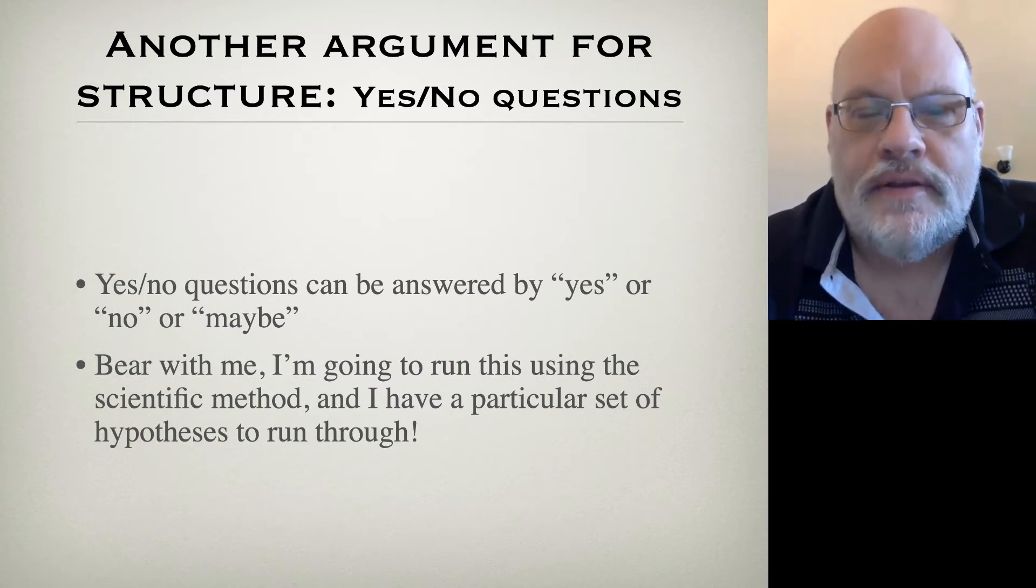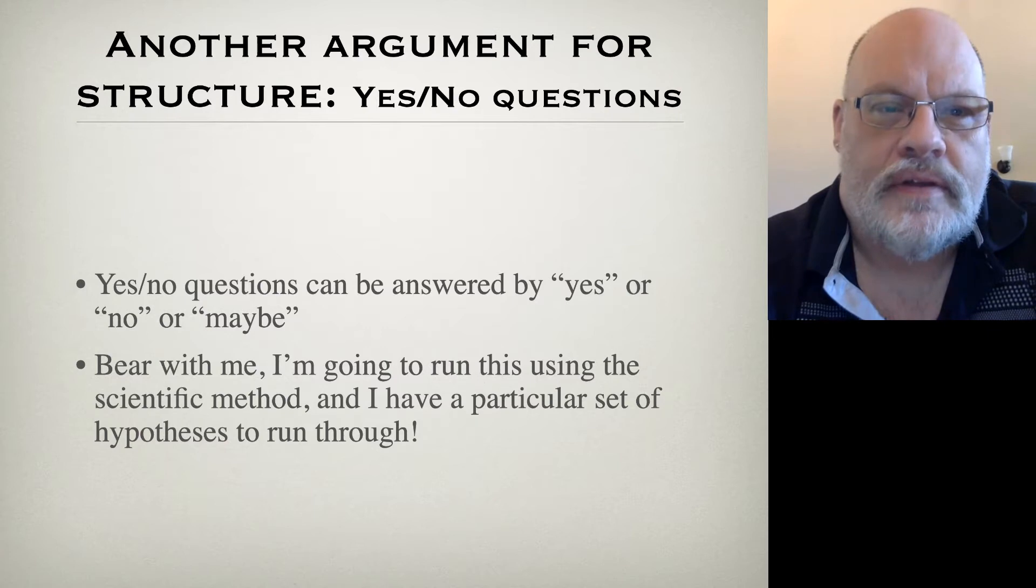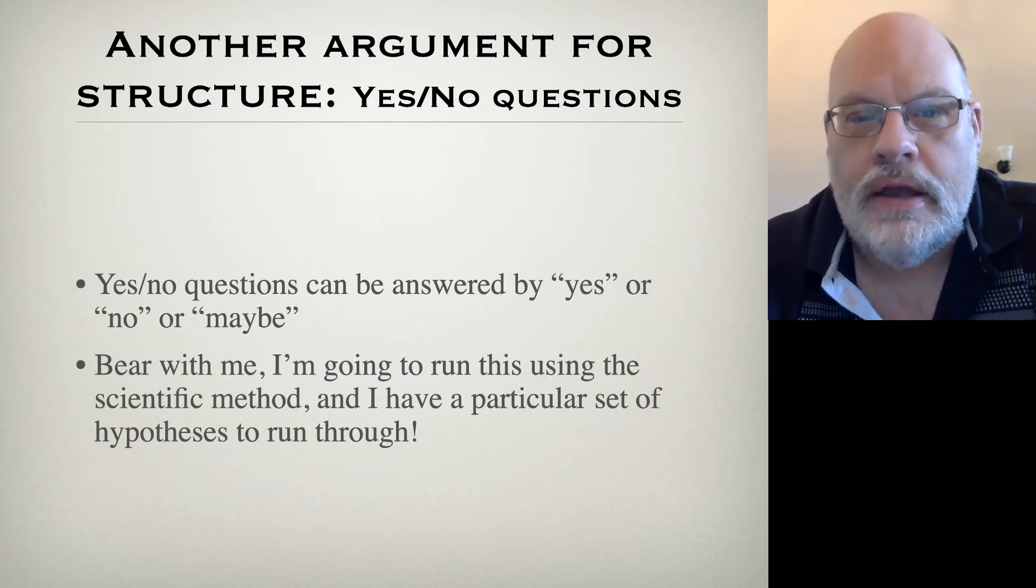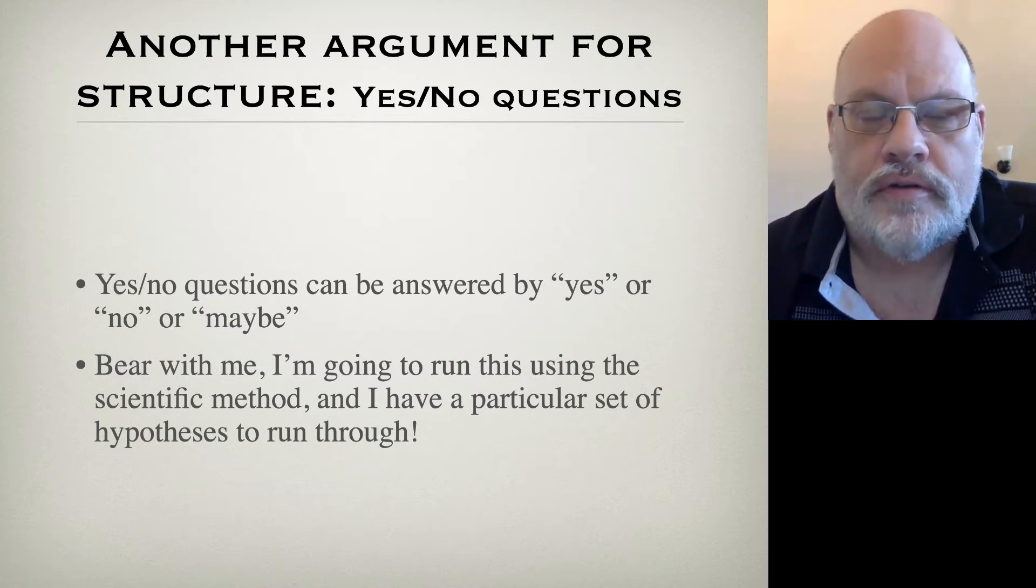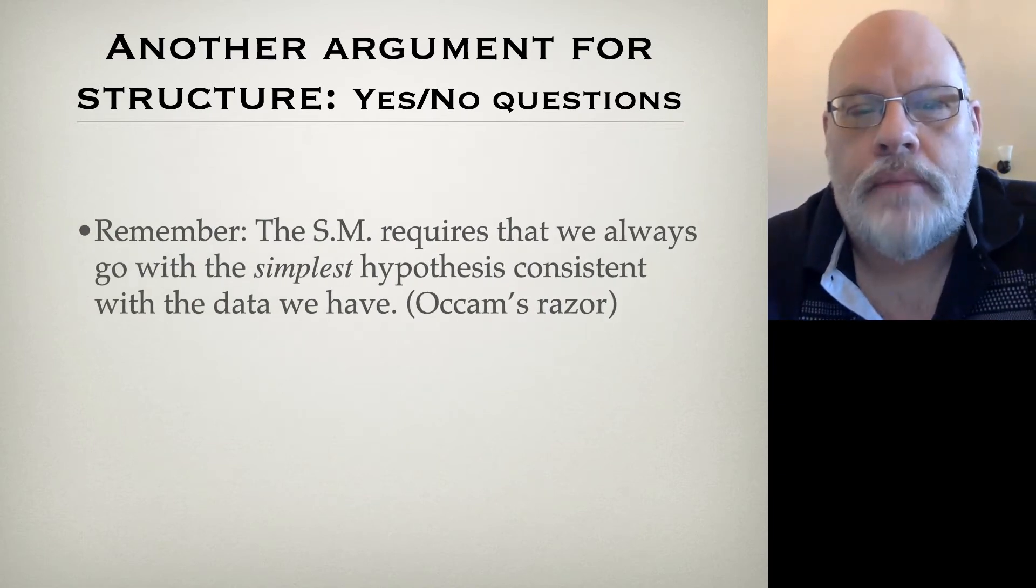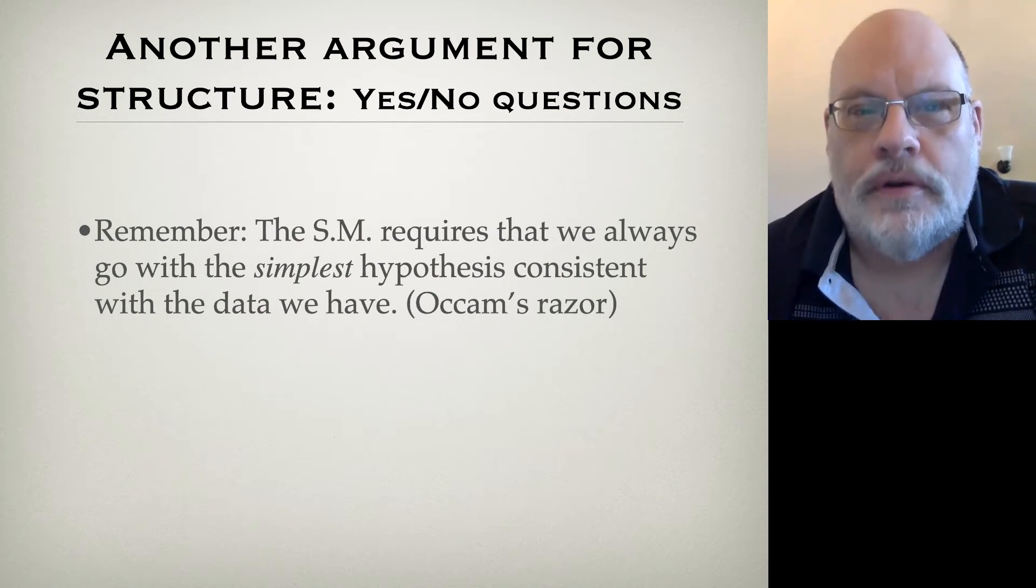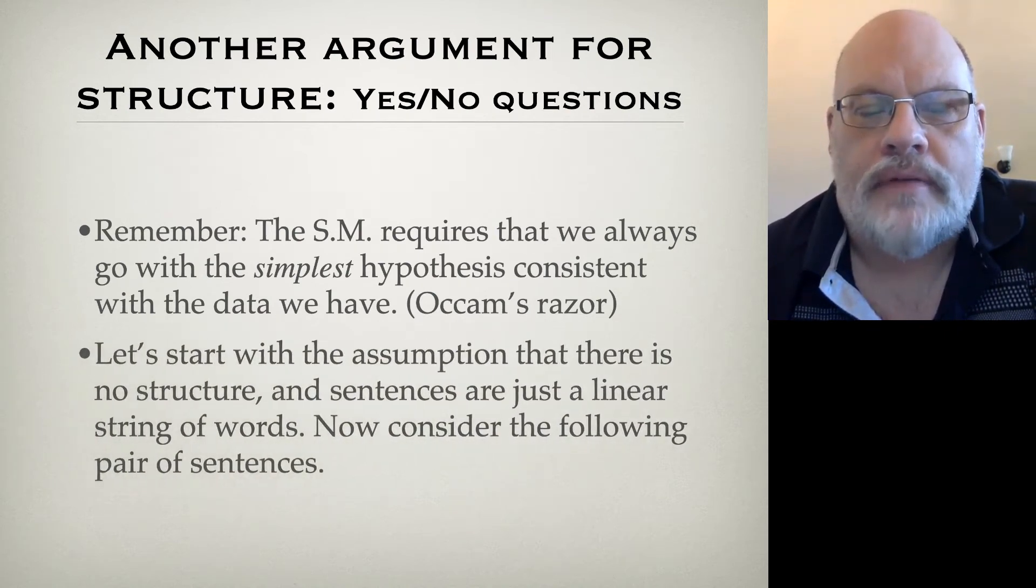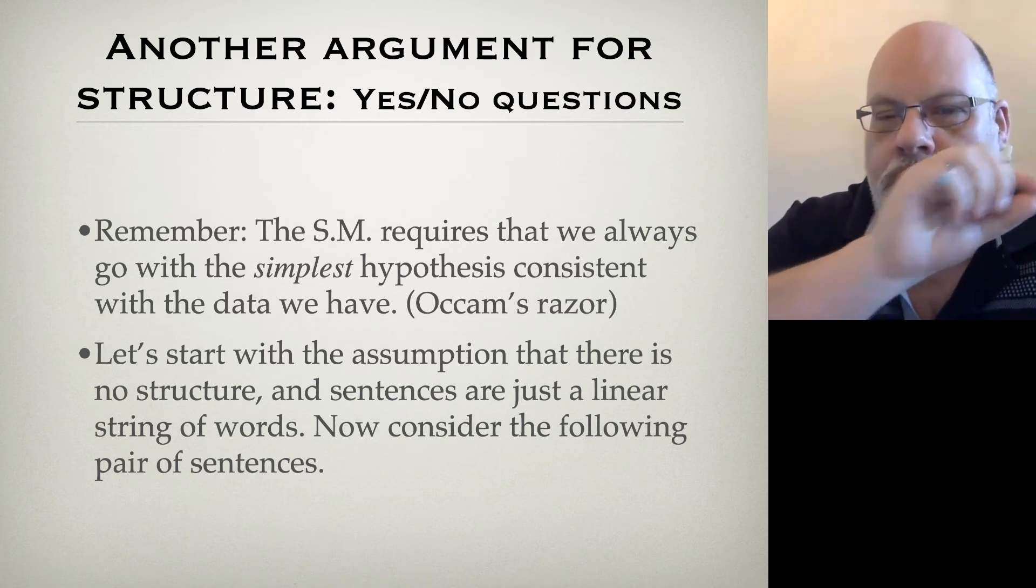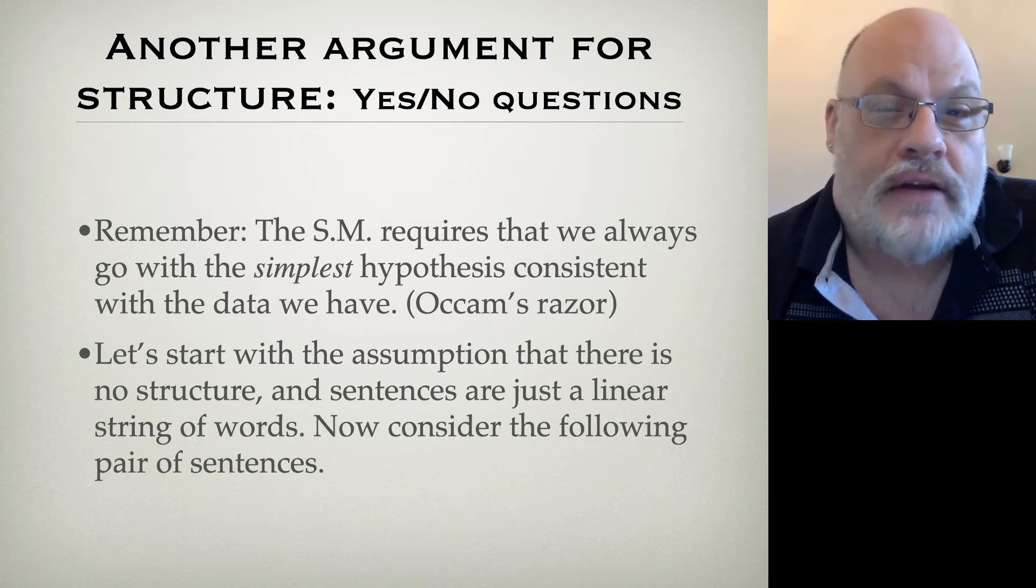I'm going to run through the scientific method here. I have a particular set of hypotheses to run through. This may seem a little pedantic, but I just want to demonstrate to you that you need to have some internal notions of structure in order to account for English sentence structure and the sentence structure of other languages. Let's start with the fact that the simplest hypothesis is always the best one in the scientific method. That's Occam's razor. One possible simple hypothesis is that there's no structure, that sentences are just linear strings of words, like beads on a string, and you don't even really have things like categories to work with.